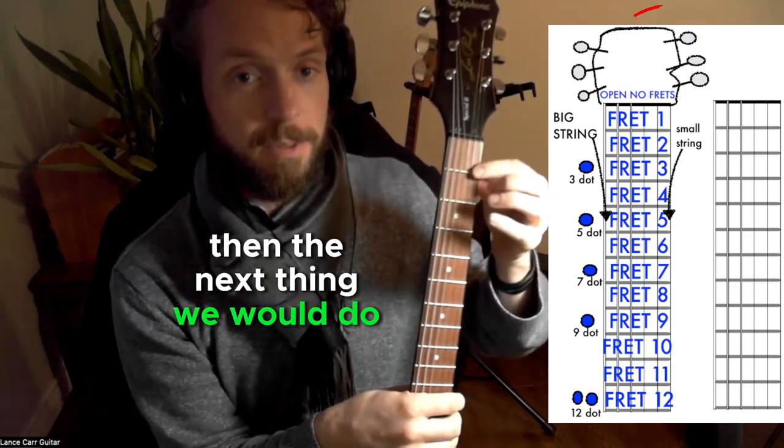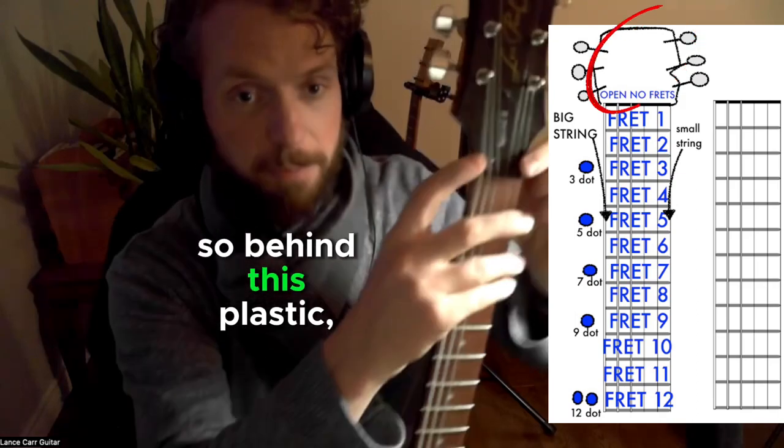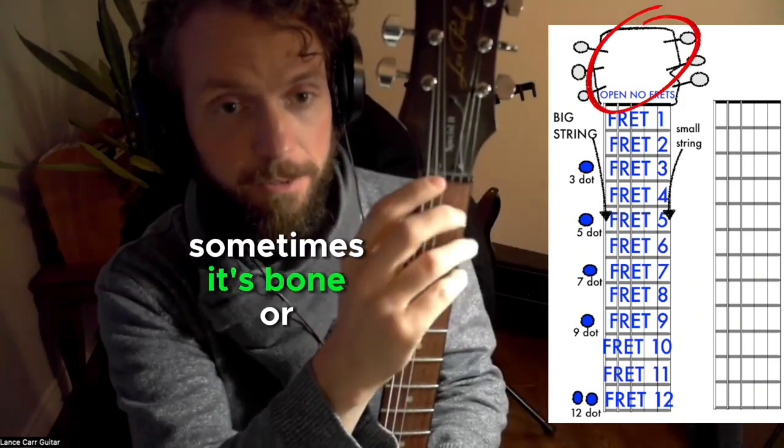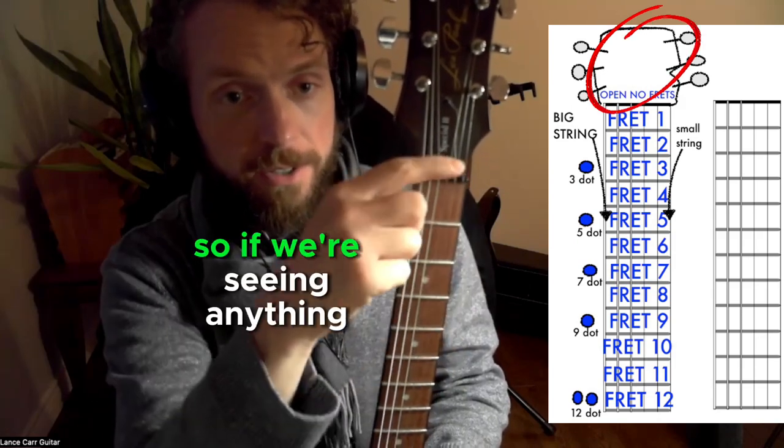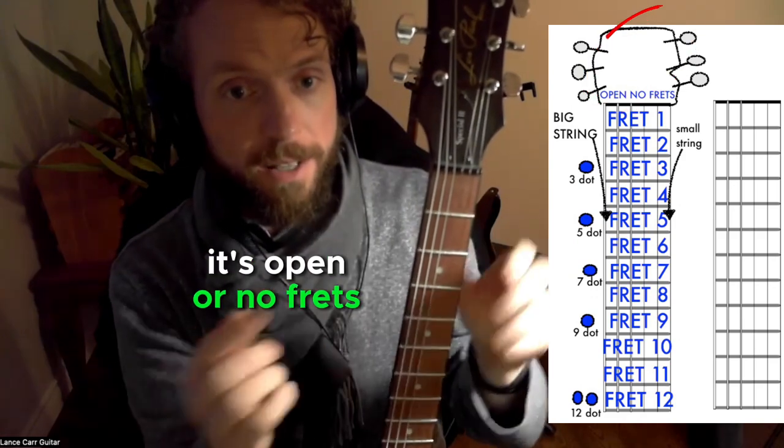Then the next thing we would do is we would count up each of the metal frets. So behind this plastic piece, sometimes it's bone or different material, that is not a fret. So if we're seeing anything behind that, it's open or no frets.